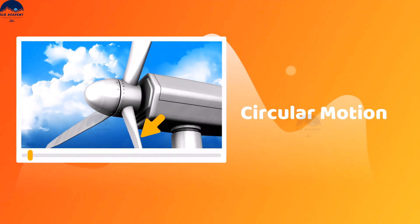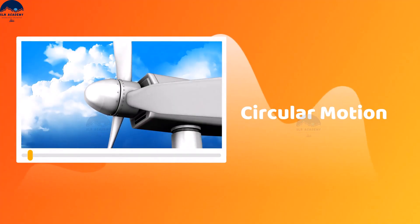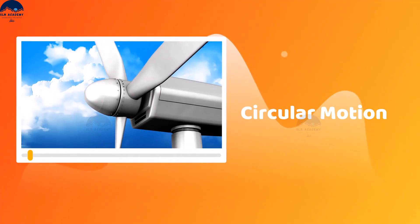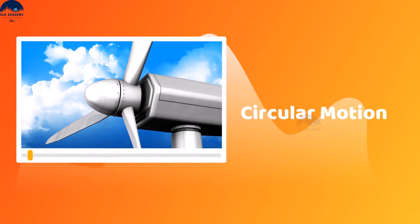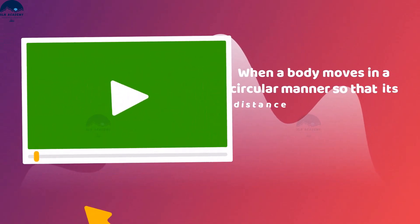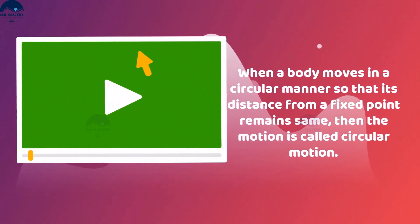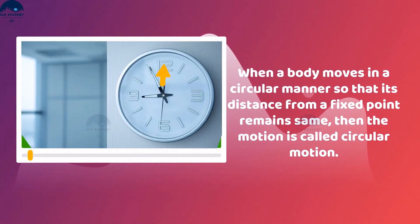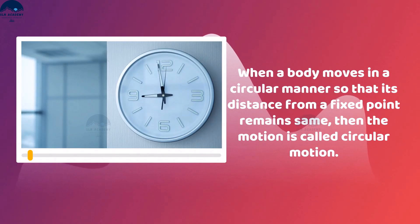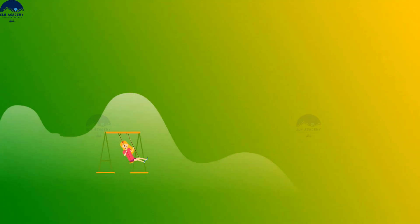Circular motion: in circular motion, an object moves such that its distance from a fixed point remains the same. Examples include the blades of a fan and the hands of a clock, whose length remains the same.